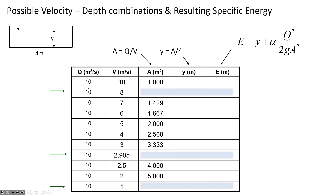For example, to get 10 cubic meters per second at 10 m/s, you'd need an area of 1 square meter; at 1 m/s, you'd need an area of 10 square meters. The depth in a 4-meter wide channel would be 0.25 m for the first case - and halving the velocity doubles the depth, since there's a linear relationship between depth and area. There are many different ways to have the same flow rate.